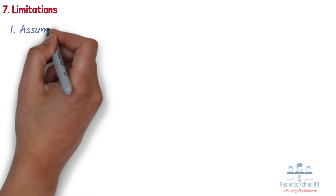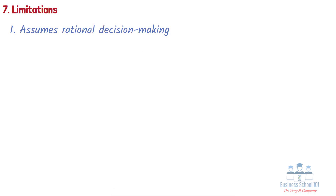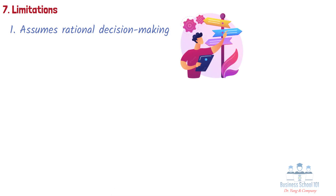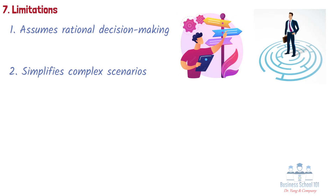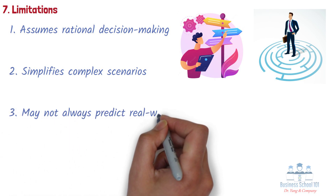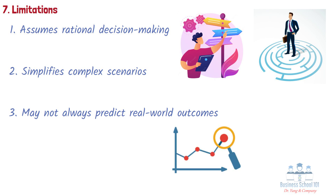Game theory is not without limitations. First, it assumes rational decision-making — that decision-makers are rational and always act in their own best interests. However, in reality, decision-makers may not always behave rationally or may have conflicting interests. Second, it simplifies complex scenarios to make them easier to model and analyze, which can sometimes result in a loss of accuracy or relevance. Third, it may not always predict real-world outcomes, because real-world scenarios may be influenced by factors not accounted for in the theoretical models.